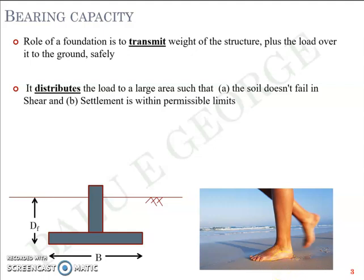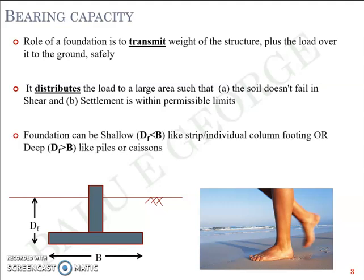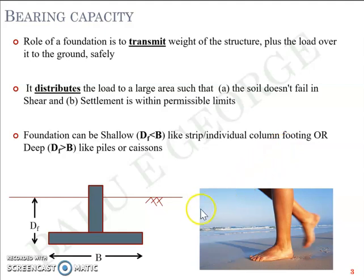Based on the depth of installation, foundations can be shallow or deep. A shallow foundation is generally when the depth of foundation Df is less than the breadth of foundation B. Strip footing and individual column footing are examples of shallow foundations. Pile foundations, caissons, and well foundations are examples of deep foundations.